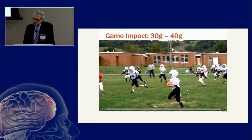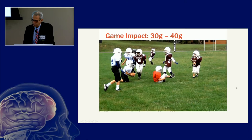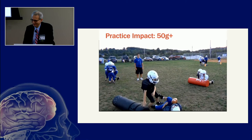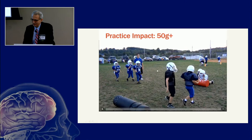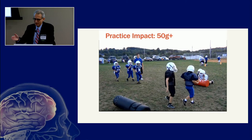Examples shown include a game impact of 30–40 Gs and a 50-plus G impact during practice, many involving helmet-to-ground contact. These subconcussive impacts — where no clinically diagnosed concussion occurred — are happening constantly at the youth level.